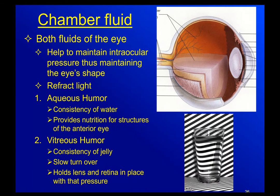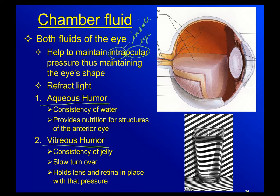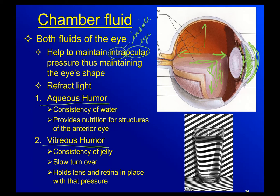Both fluids in your eye — the aqueous humor and the vitreous humor — maintain the intraocular pressure. Intra means inside, ocular means eye. The vitreous humor pushes in all directions, keeping your eye round. The aqueous humor helps keep the lens in place and keeps the structures in the anterior eye properly shaped. The maintenance of internal pressure to keep your eye the proper shape is controlled by these three chambers being filled with either aqueous or vitreous humor.